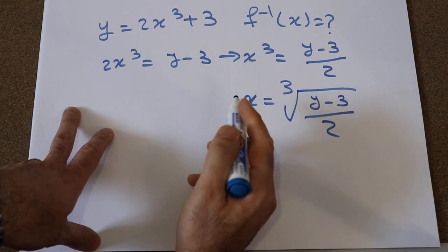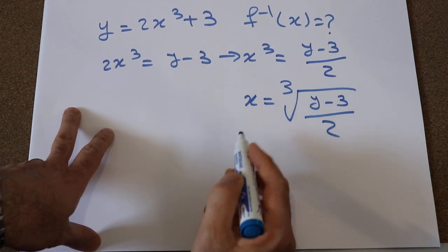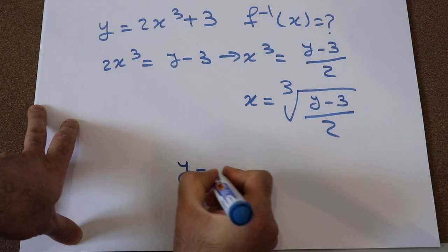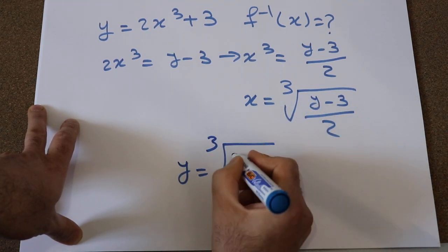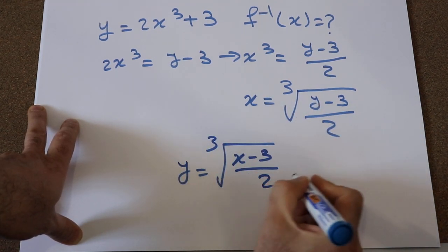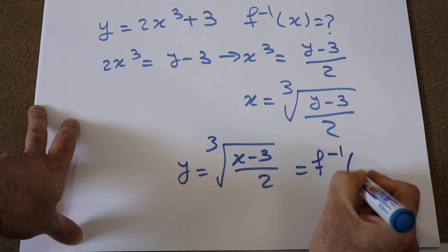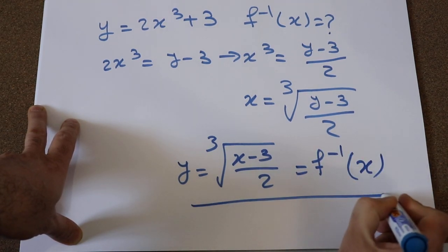Step two is wherever you see x, convert it to y, and wherever you see y, convert it to x. And that will give you the inverse of the function.